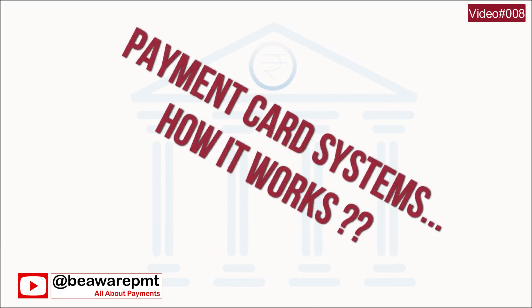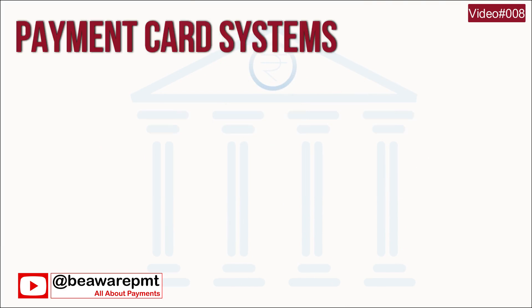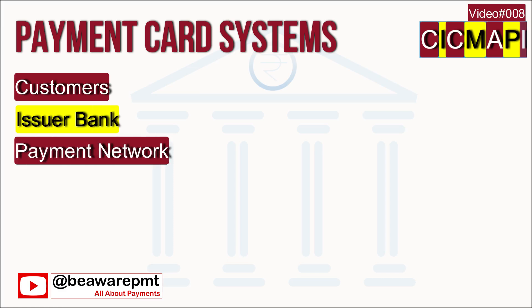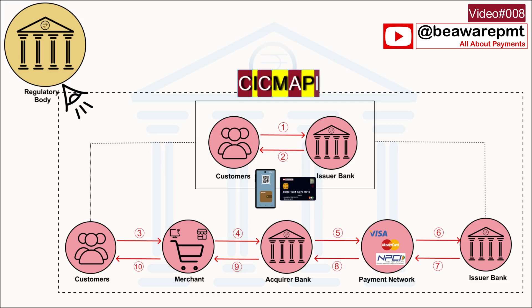Payment card systems work in the CIGMAPI model. C stands for the customer whose card is issued and who uses the card for payments. I stands for issuer bank. G stands for... P stands for payment network. A stands for acquiring bank. M stands for merchant. The whole system is regulated by a regulating authority — in India it's RBI, the Reserve Bank of India.